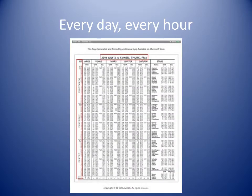When a bearing or altitude of a celestial body is taken, the exact time of the observation is important to any subsequent calculations done to find an azimuth for compass error. This slide shows a page from the Nautical Almanac — specifically, the Stars and Planets page.